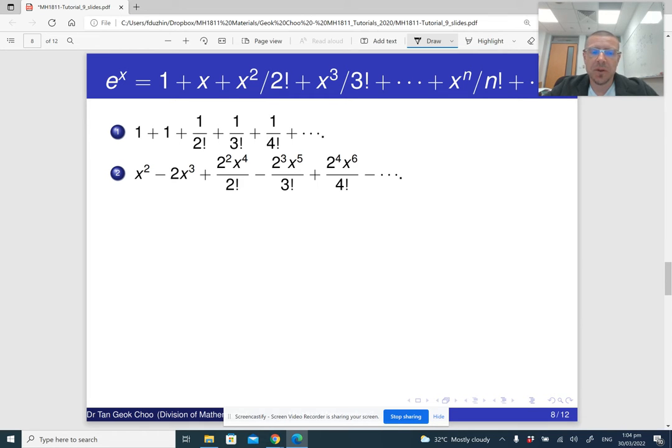So in part a, we've got to compute the sum of two power series. Well, the first of them is immediately straightforward. If you just look at it, you will notice that you obtain it from this power series by letting x equal to one. So it means that this is really e to the one, which is e.